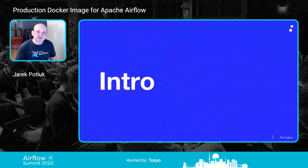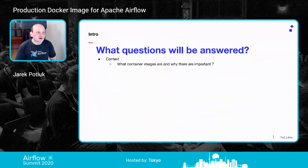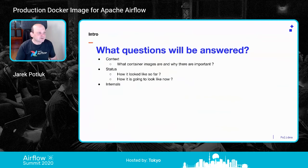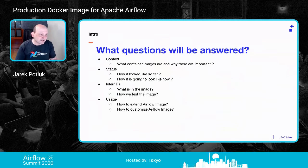A few things about the intro: for those watching, it's fair to say what questions will be answered so you can decide if you want to watch at all. There will be context about what container images are and why they're important, a bit of history of how things looked for Airflow, what's happening right now with the Docker image and Helm chart, some internals about what's in the image, how we test it, and guidelines on how to extend and customize the image — which are two different things.